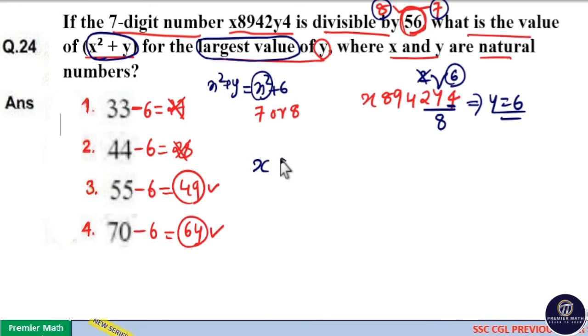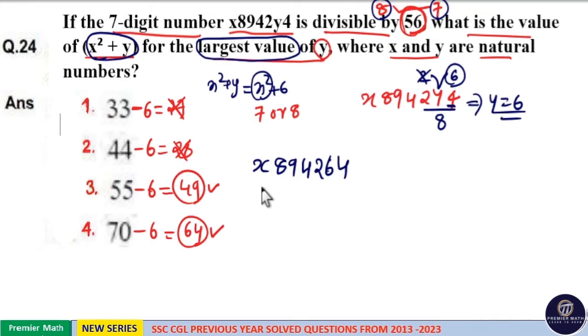The number is x89 42y4, which is 64. To check the divisibility rule of 7, split the number as a 3-digit number starting from the left-hand side. That is 264, 894, x.